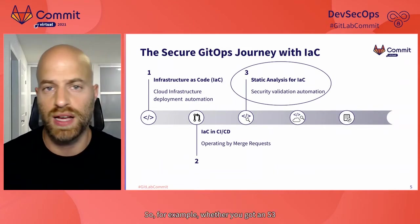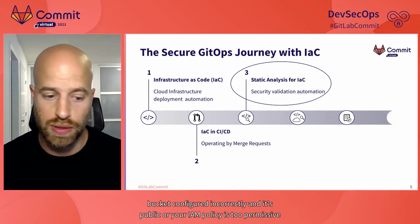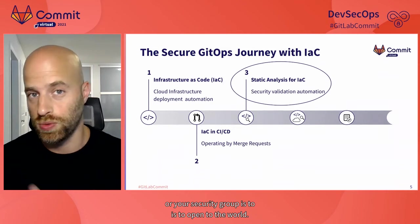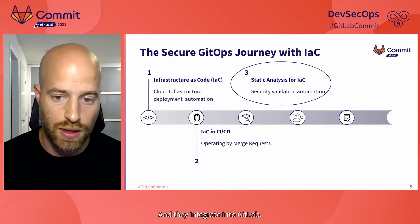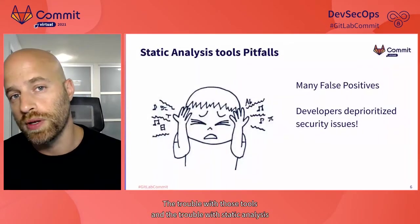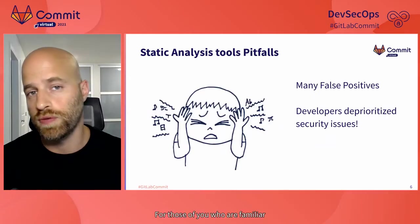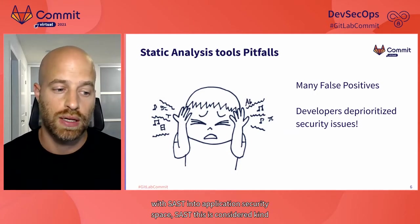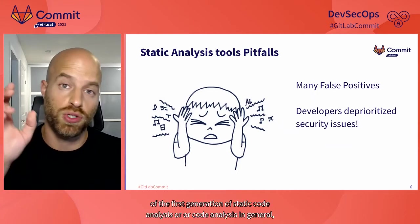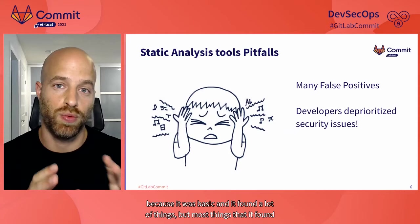Those tools analyze your code and look for potential security misconfigurations — for example whether you've got an S3 bucket configured incorrectly and it's public, your IAM policy is too permissive, or your security group is too open to the world. Those are the kinds of things those tools will find, and they integrate into GitLab. The trouble with static analysis in general is that it has a lot of false positives — it's very noisy and annoying for developers. Those familiar with SAST in application security know it's considered the first generation of code analysis.